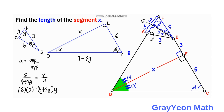Simplifying the cross multiplication: 18 equals 9Y plus 2Y squared. Rearranging, we get 0 equals 2Y squared plus 9Y minus 18.